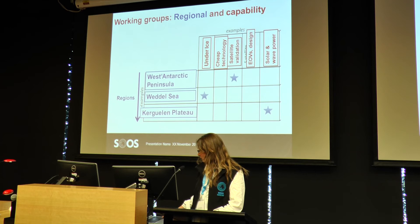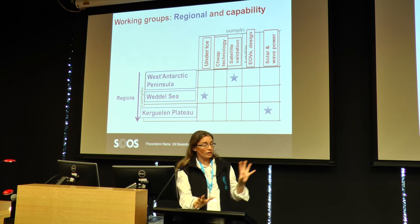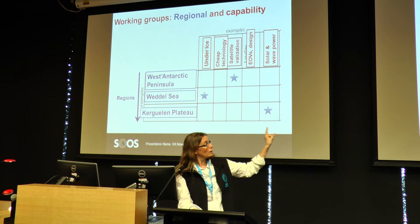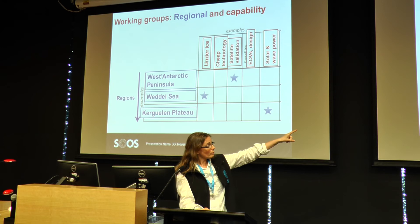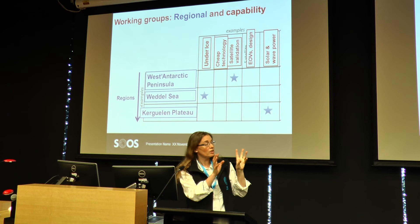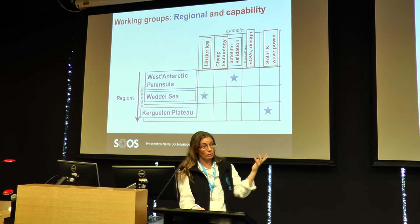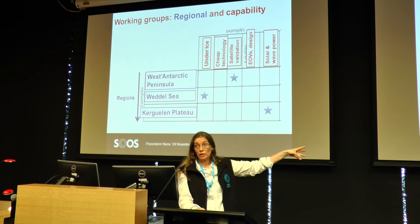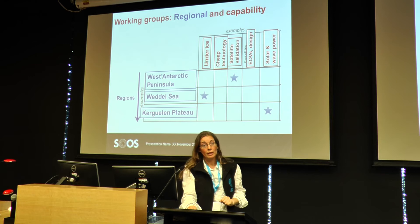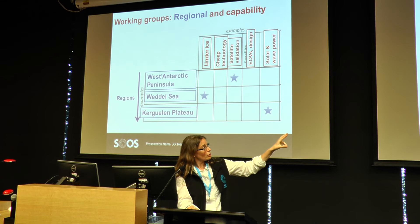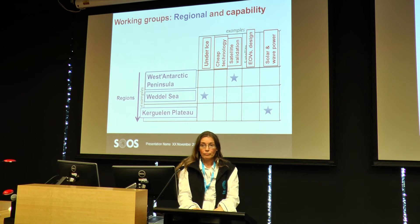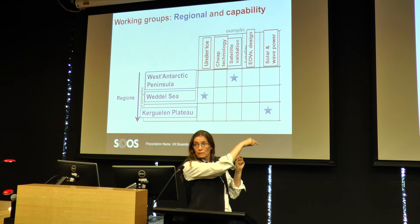Working groups have different dimensions: they can be regional, and they can be focused on capability. You can think of it as a matrix. The capability dimension can be, for example, under-ice, development of cheap technology, ships of opportunity, satellite validation, or EOVs. On the other dimension, you have regions. The goal is to populate this matrix everywhere, and part of the work will be to judge where every region is with regard to all these capabilities, and identify what steps need to be taken to make that dot in the matrix move along.